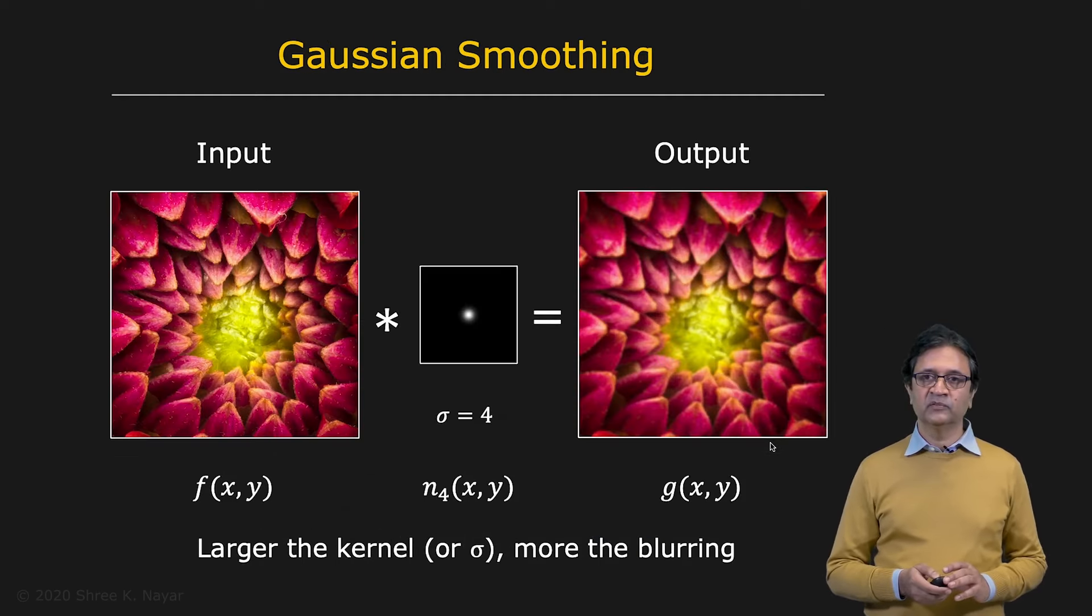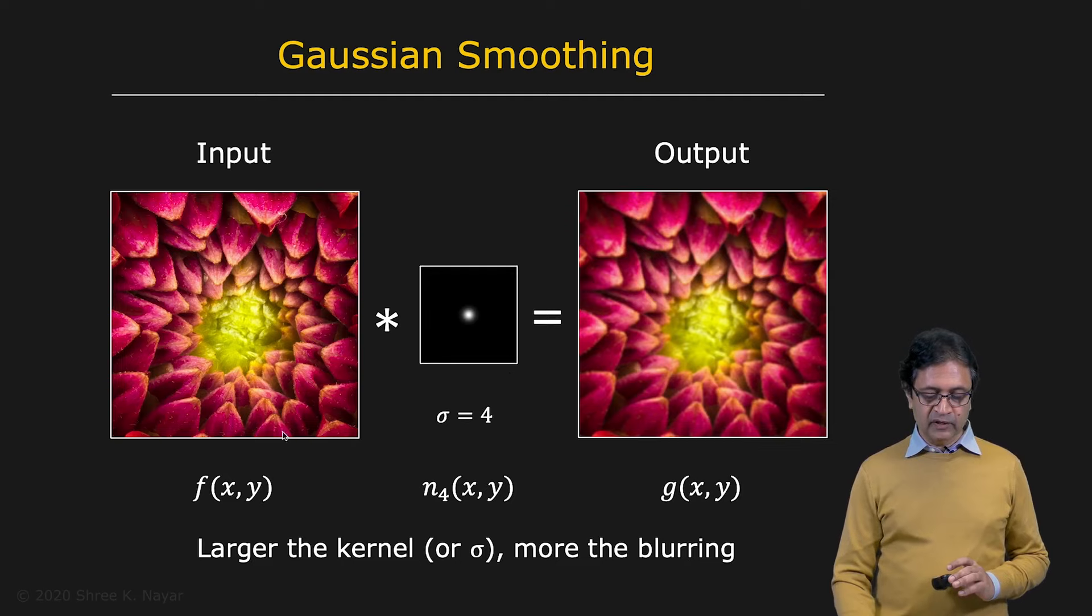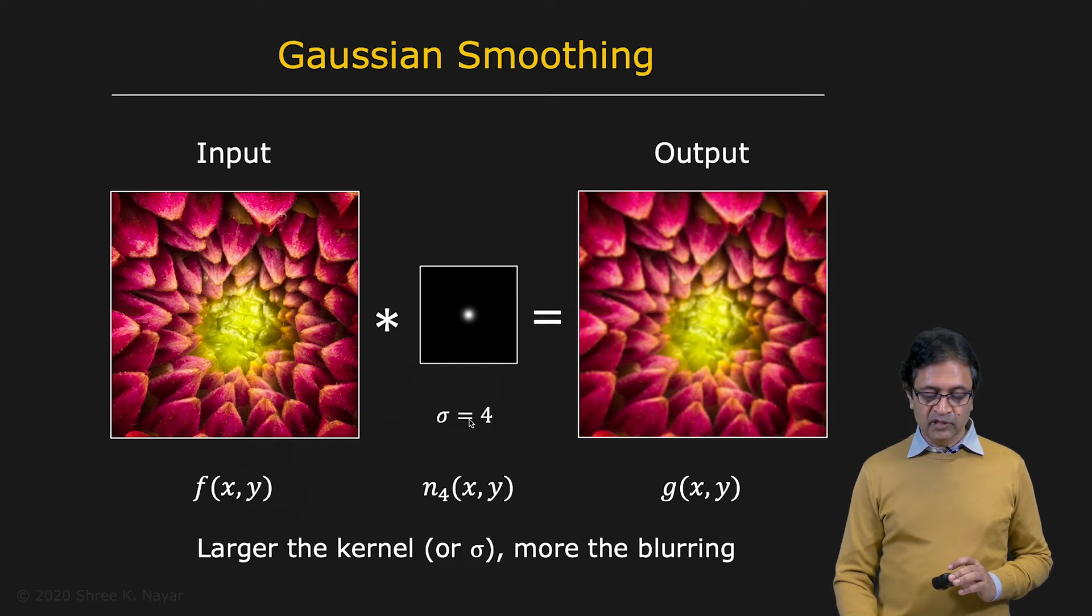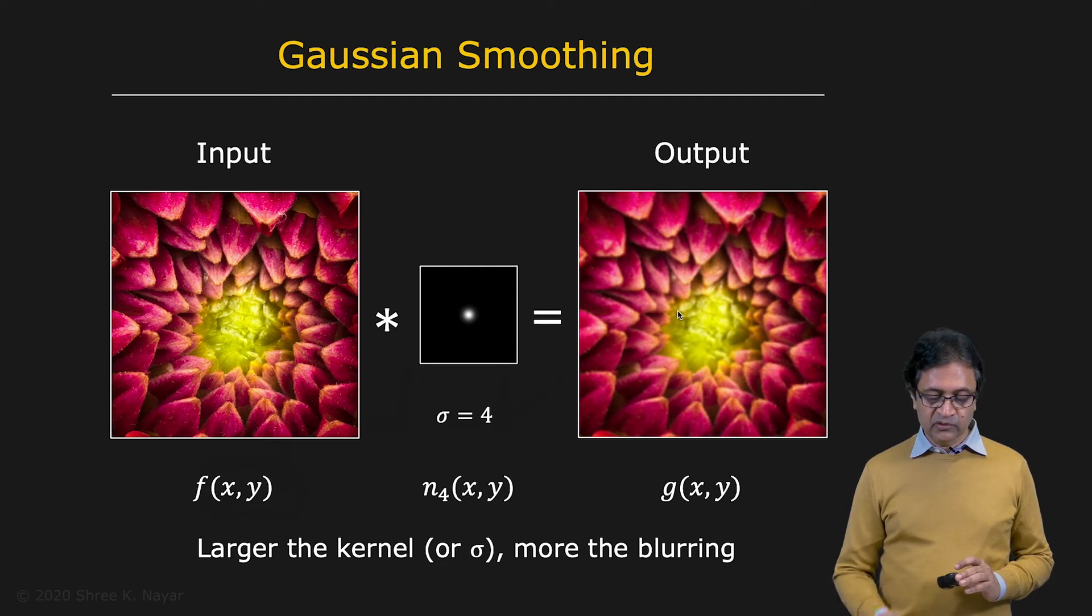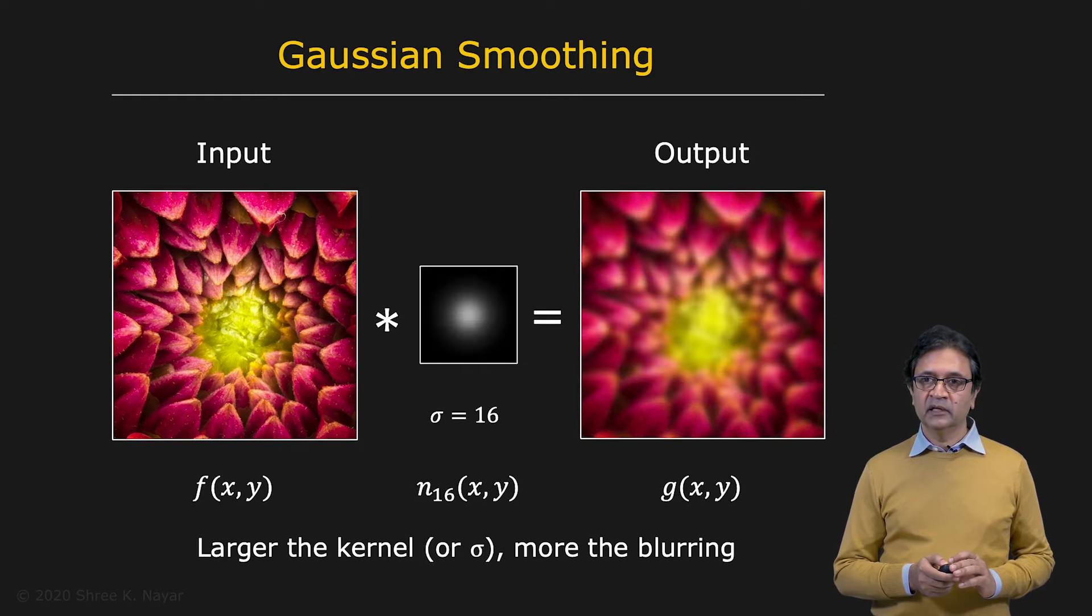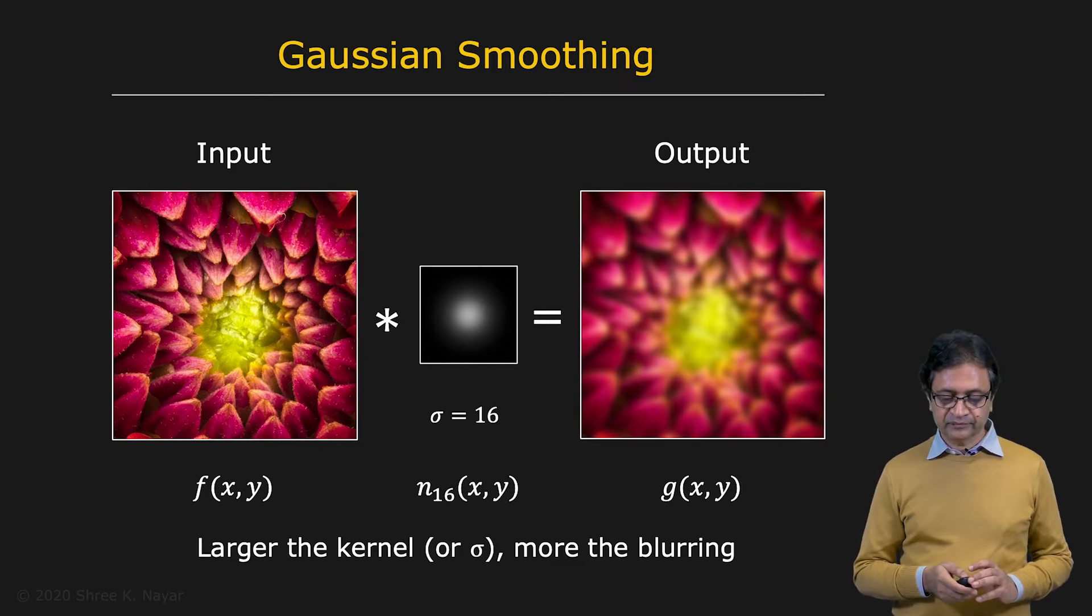Okay, so let's look at how Gaussian smoothing might work. Here you have a function f of x, y. I'm denoting this in continuous domain, but these are all discrete images. And now if you convolve it with the Gaussian with sigma equal to 4, you get a little bit of smoothing. And maybe that's what you want. As you increase sigma to 8, you get a little bit more smoothing or blurring. And then you can go to 16, you get a little bit more. And in all cases, you really don't see any new artifacts being introduced in the image itself.